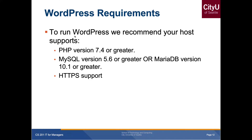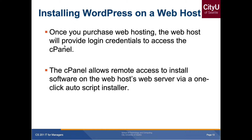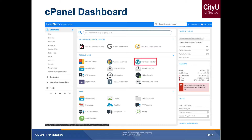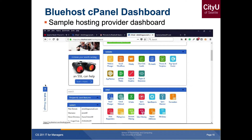To run WordPress, your dependencies include PHP version 7.4 or greater, a MySQL database, and HTTPS support. Once you purchase web hosting, the web host provides login credentials to access the cPanel — your admin panel for the hosting provider — which allows remote access to install software on the web server via a one-click script installer. This is how the dashboard looks, as shown here using Bluehost as an example web hosting provider.